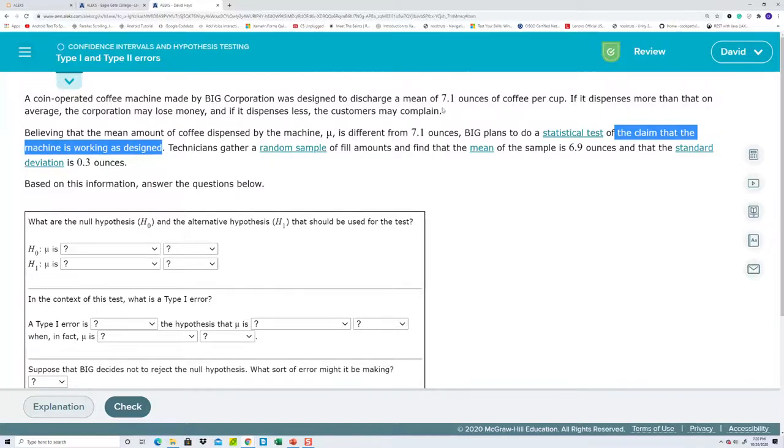Because it says, if it dispenses more than an average, a corporation may lose money. If it dispenses less, the customers may complain. Okay. I guess that is, maybe I'm thinking of another problem. Claim that the machine is working as designed. Working as designed means the mean equals 7.1. Where you put the equals at is right here. Remember, the only symbols you can put in H naught are equal to, less than or equal to, or greater than equal to. If that's equal to, this is the opposite, which is not equal to.